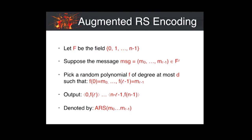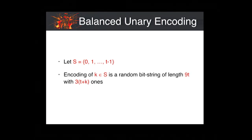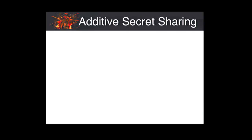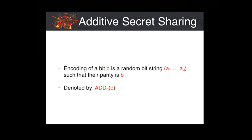This is denoted ARS(M0, M1, ..., M_{L-1}). The next encoding is called balanced unary encoding. Suppose we have a set S = {0, 1, 2, ..., T-1}. To encode an element K in this set, we choose a random bit string of length 9T which has 3T + 3K ones, denoted BU3(K). The last encoding is the additive secret sharing scheme, where a bit B is encoded by A1, A2, ..., A_Q such that the parity of these bits equals B, denoted Add_Q(B).